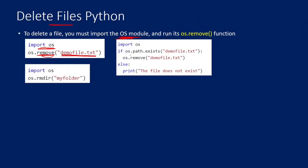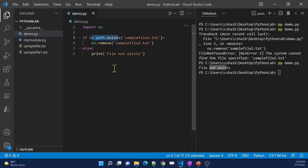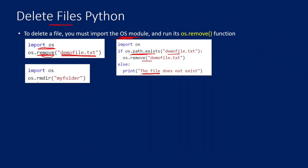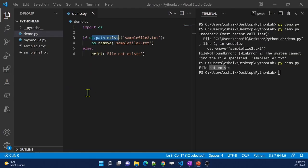Going back to the presentation — the same concept is shown here: use `os.path.exists` with the file name; if it's there then remove it, otherwise print a message saying the file is not there.